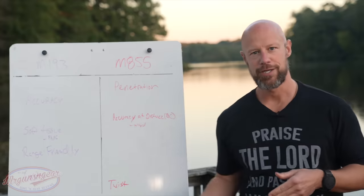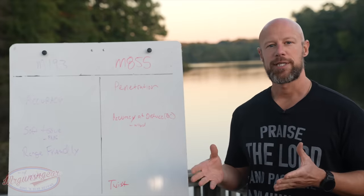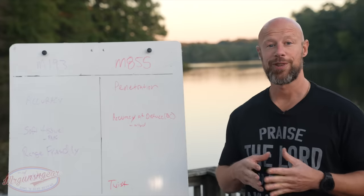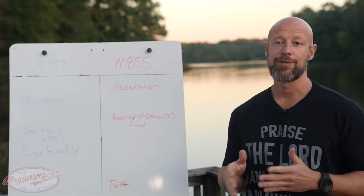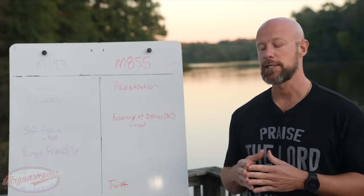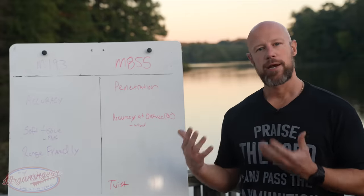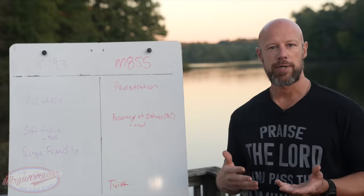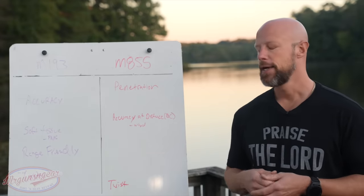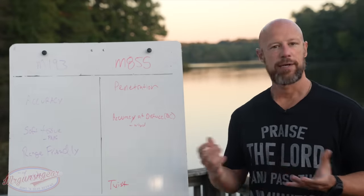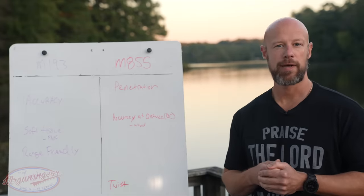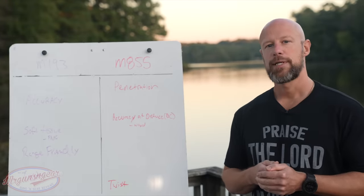Just a quick history: when the M16 was first adopted there were some big issues with the ammunition. Once all those kinks got worked out with the powder, the bullet type, and twist rate, they standardized on the M193, which is a 55 grain 5.56 round. That was the standard for the American military all the way up until 1982 when M855 was adopted.